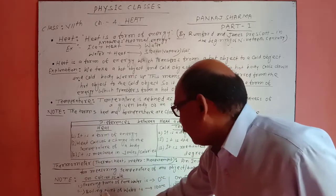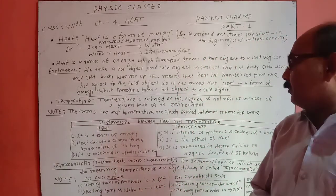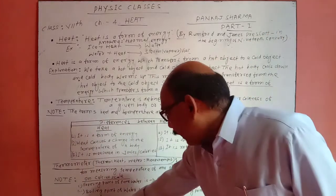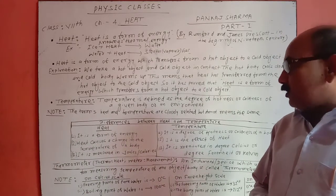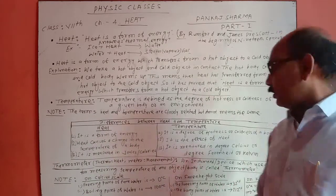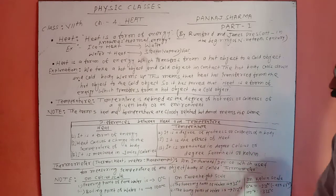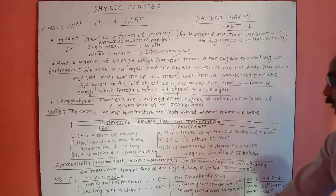On the Celsius scale, the freezing point of pure water is zero degrees Celsius and the boiling point is 100 degrees Celsius. On the Fahrenheit scale, the freezing point is 32 degrees Fahrenheit and the boiling point is 212 degrees Fahrenheit.